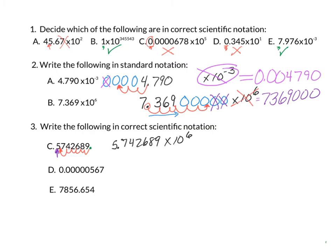Pause the video while you do letter D. For this one, we're going to find our decimal place and place it so there is one number in front of the decimal, which means we're going to go forward 1, 2, 3, 4, 5, and 6. So our answer will be 5.6 times 10 to the negative 6. Notice that the number is less than 1, so we get a negative number in our exponent. Also notice that I don't always keep those zeros — they're just placeholder zeros because they're in front of an important number.